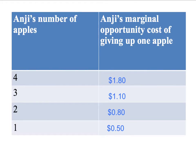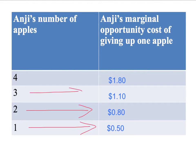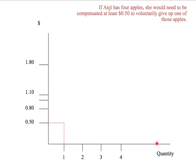Now we have a table that gives Anji's marginal opportunity cost of giving up one apple, and we've done that for each of her four apples. The marginal opportunity cost of her first apple is $0.50; second apple (given she's given up the first) is $0.80; giving up a third apple is $1.10; and giving up her last apple is $1.80. We're now able to plot those and get Anji's marginal opportunity cost curve. We've got quantity on the horizontal axis and price on the vertical axis.